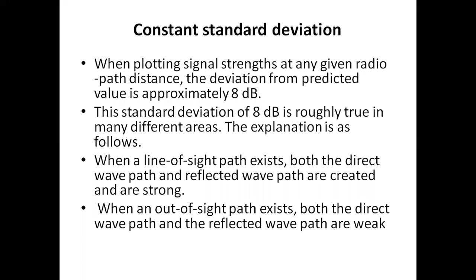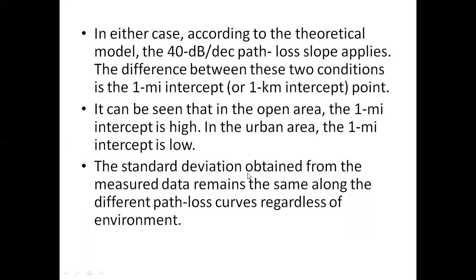Line of sight path means there are no obstacles between transmitter and receiver - they can see each other. When line of sight exists, the direct wave and reflected wave are strong. For out of sight path, the transmitter and receiver cannot see each other, and the waves are weak. In either case, theoretically the path loss follows 40 dB per decade, whereas in free space it is 20 dB per decade.